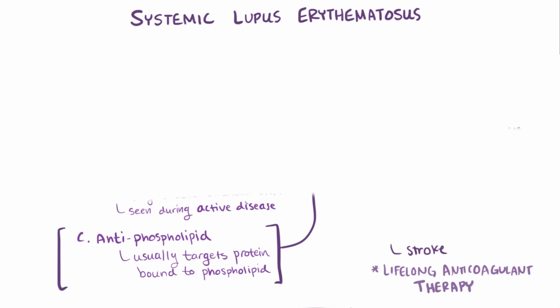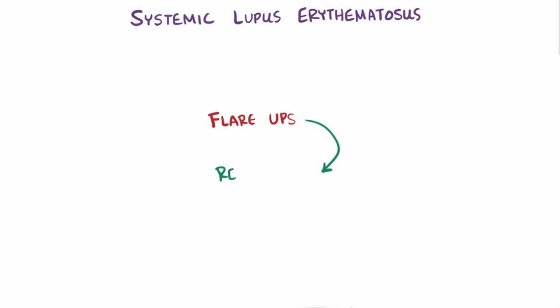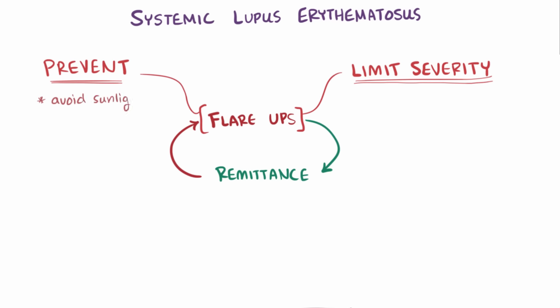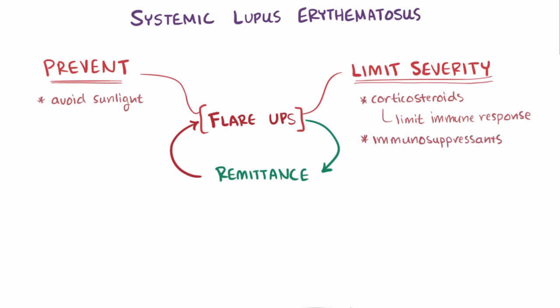Lupus is characterized by periods of flare-ups and remission, so treatment aims to prevent flares or limit their severity. To help prevent flares, some patients must avoid sunlight using hats or long-sleeve clothing. To reduce flare severity, corticosteroids may be used to limit the immune response, and for severe symptoms, immunosuppressive drugs may be prescribed.